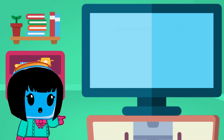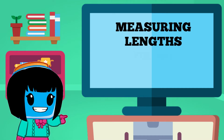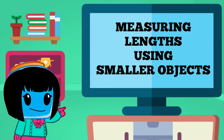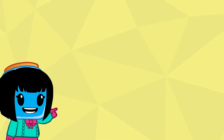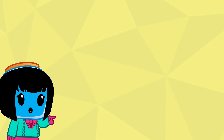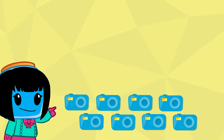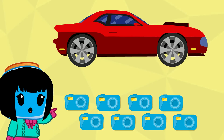Now let's move on to measuring lengths using smaller objects. For our first example, use the cameras to measure the length of the car.